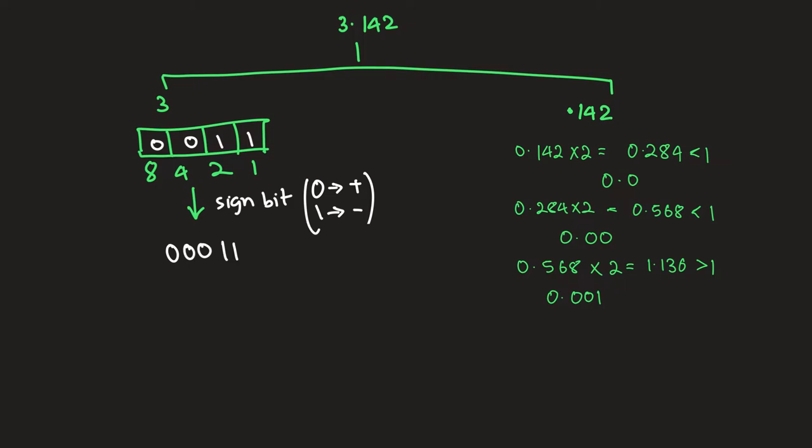From here we will take 0.136 and multiply that by 2. We're gonna get 0.272 and this is again less than 1 so we put 0.0010. Now again we're gonna multiply 0.272 into 2, this is going to give us 0.544. Again less than 1, we'll have another 0.